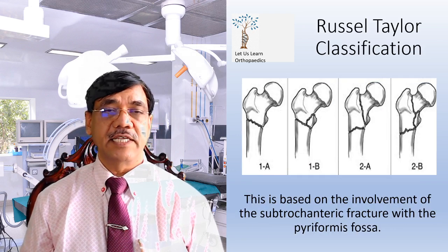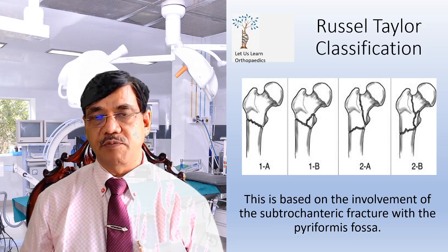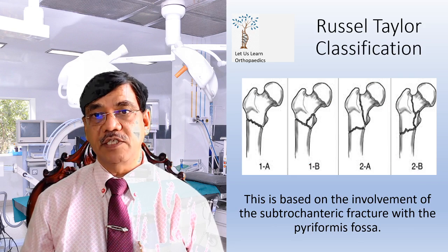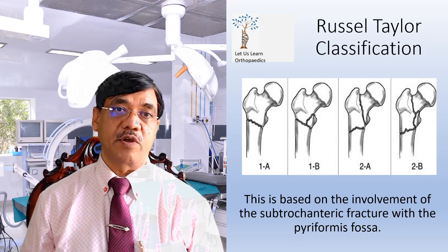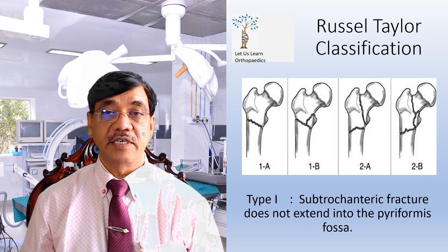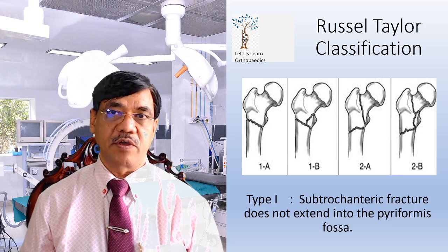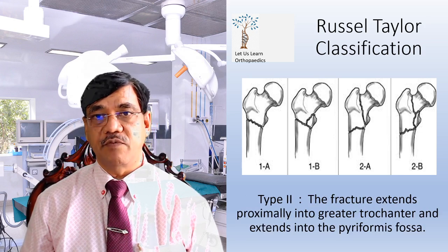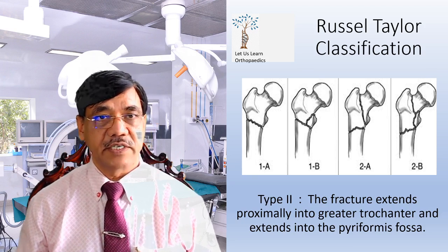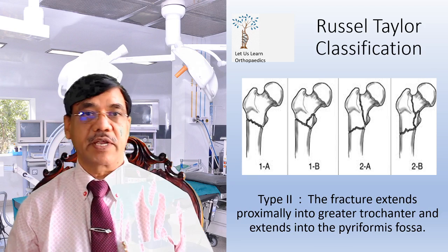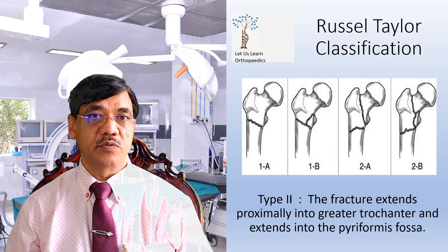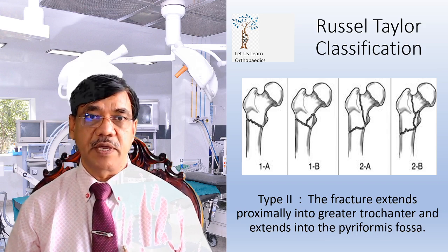Russell-Taylor has classified subtrochanteric fractures based on the involvement of the fracture with the piriformis fossa. Type 1 fractures do not extend into the piriformis fossa: Type 1A where the lesser trochanter is not fractured, and Type 1B where the lesser trochanter is fractured. Type 2 fractures extend proximally into the greater trochanter and into the piriformis fossa.